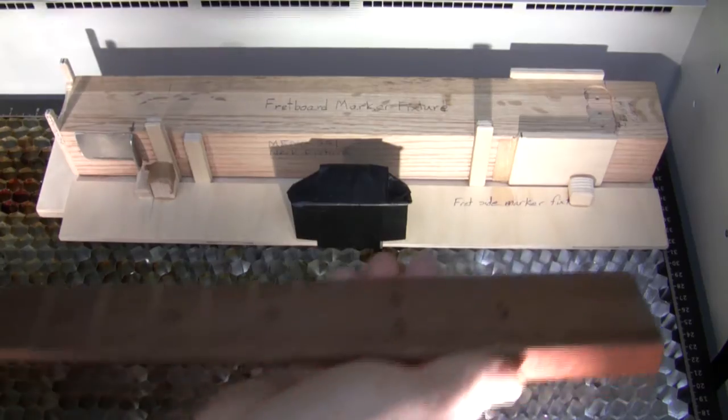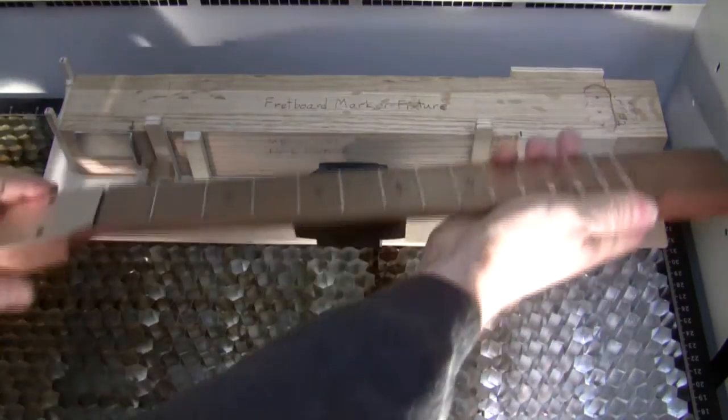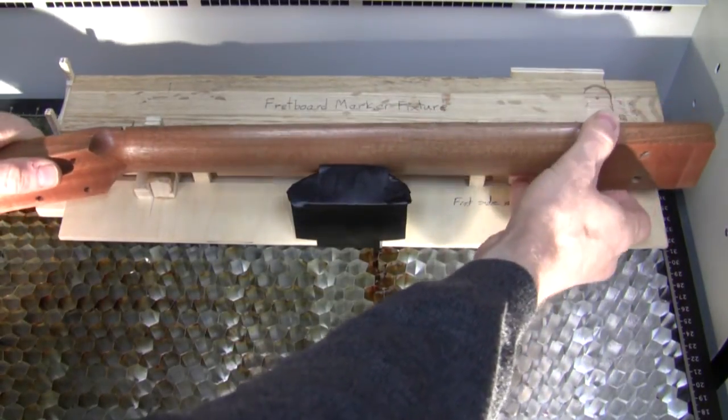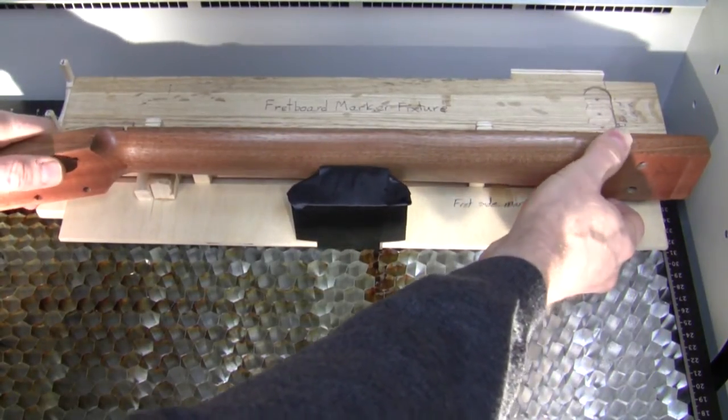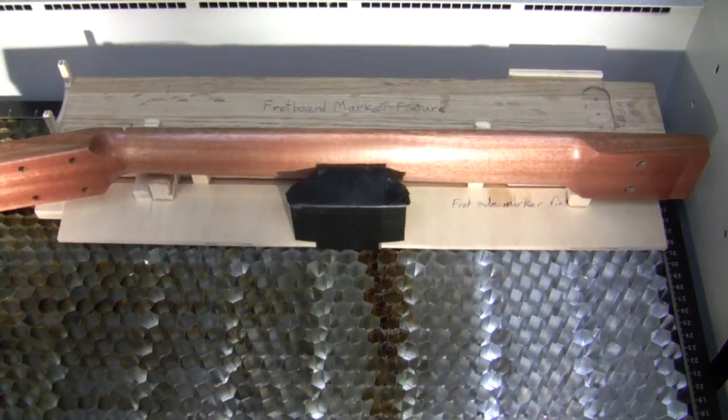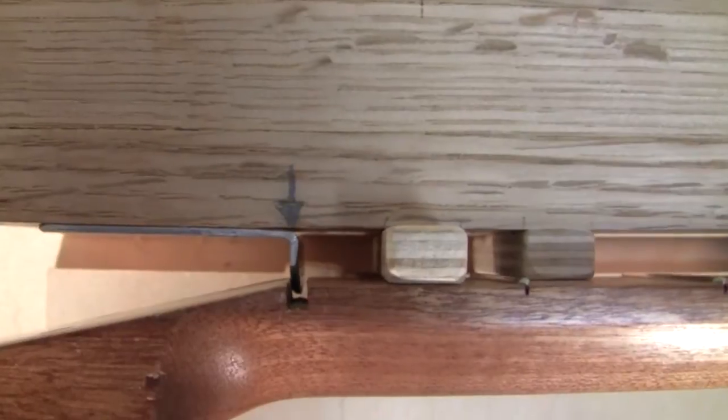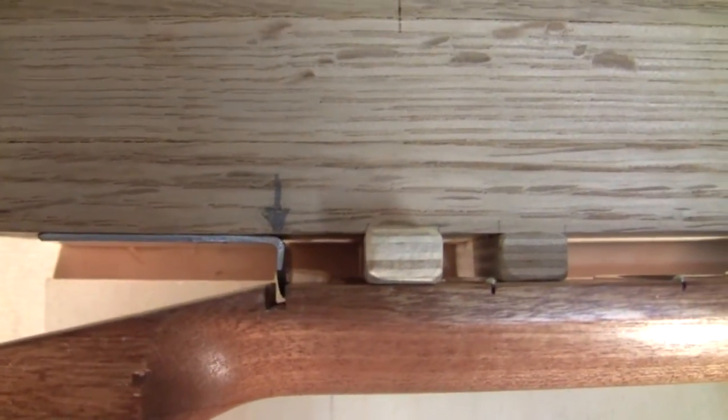Then we're going to move on to side markers which I'd recommend because they're more useful when you play. We'll slide the neck off the fixture. Now we're going to use that little aluminum tab and that goes in the nut slot. Line that up and then push all the way down so it's hitting the standoffs for the height.